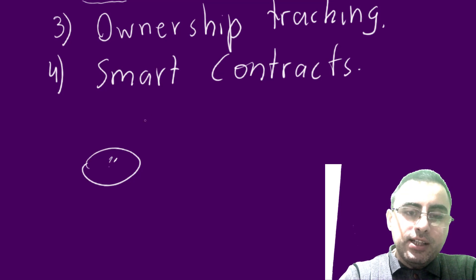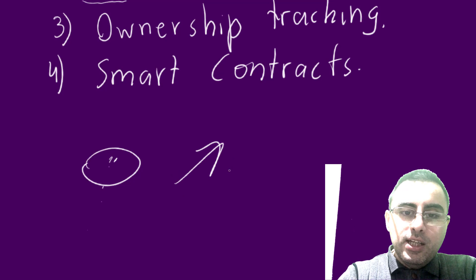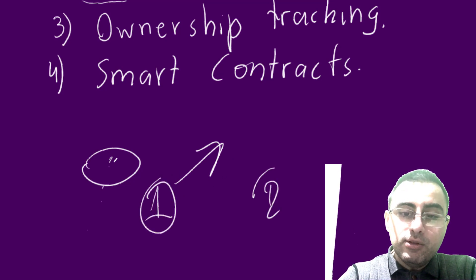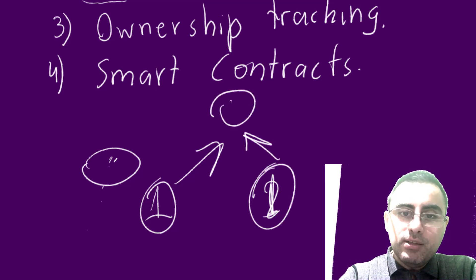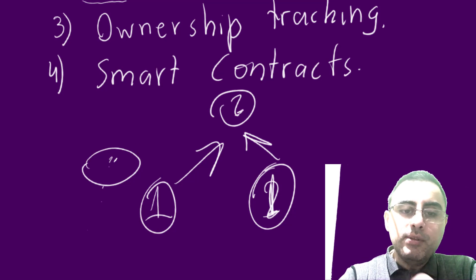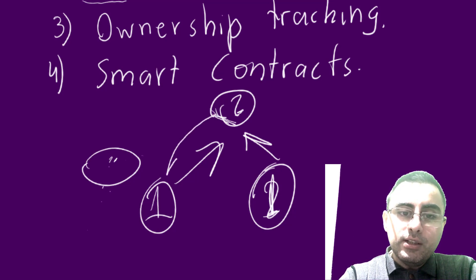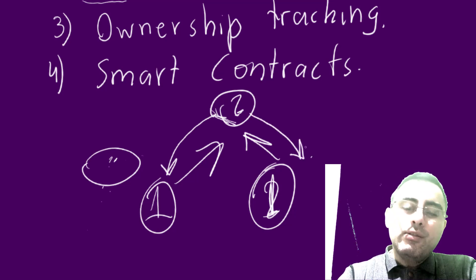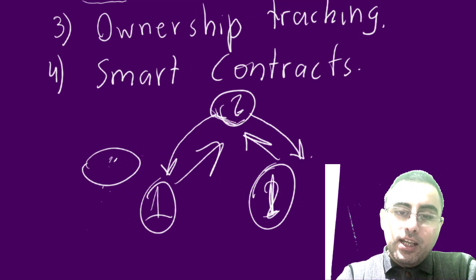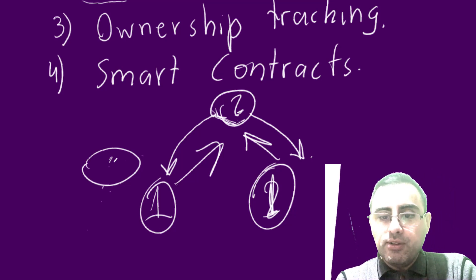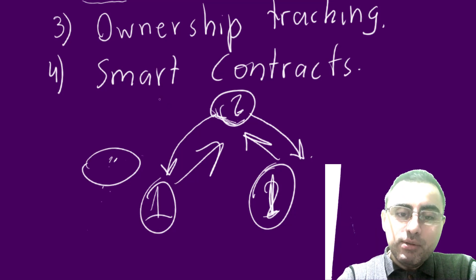Imagine you and I are betting on a coin toss. If it lands heads, I get the money; if tails, you get the money. We each put in one dollar, so the system holds two dollars. After we toss the coin, the system keeps the money until the result is known. If it's tails, the system transfers the two dollars to me; if heads, it transfers to you.